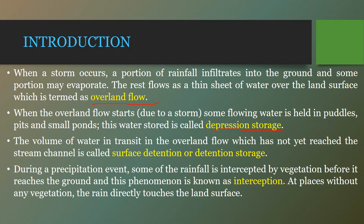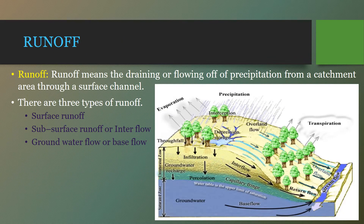During a precipitation event, some of the rainfall is intercepted by vegetation before it reaches the ground. Runoff is the portion of precipitation that makes its way towards a river or ocean by surface or subsurface flow. Runoff is the portion of precipitation which satisfies all losses — like infiltration losses, initial losses, evaporation, and surface retention — and then flows as surface or subsurface flow.